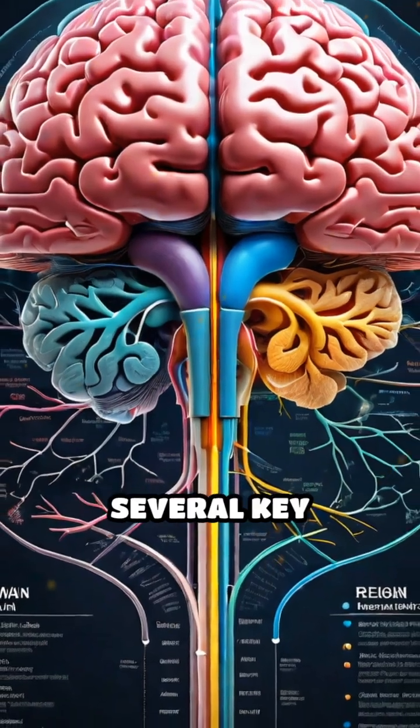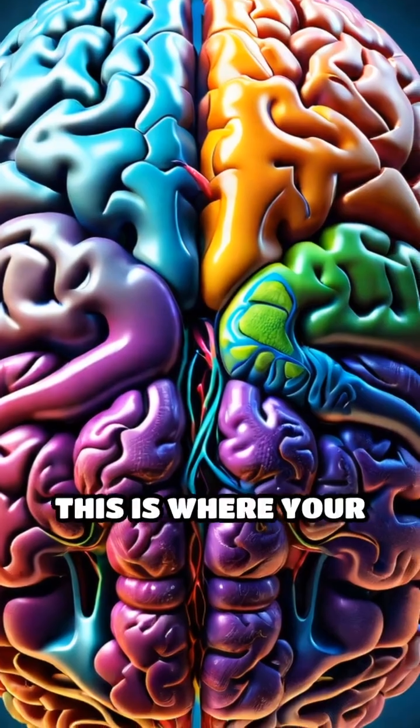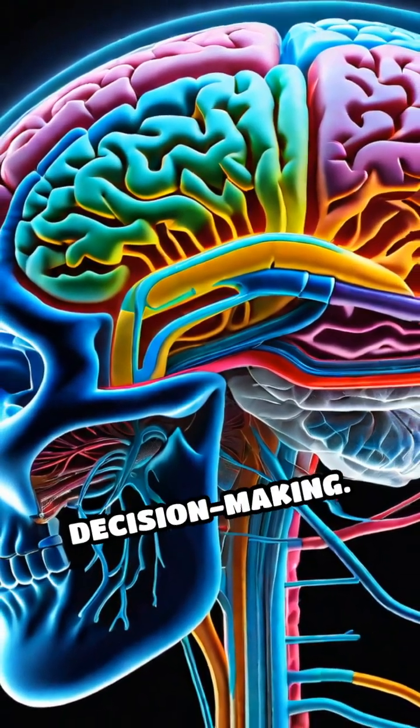The human brain is composed of several key regions. Meet the cerebrum, the largest part of your brain. This is where your higher level thinking happens, things like learning, memory, and decision making.